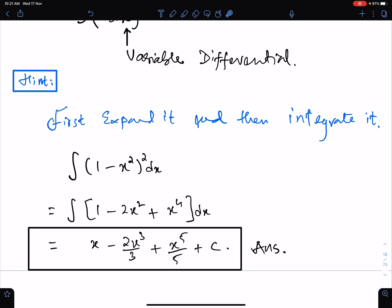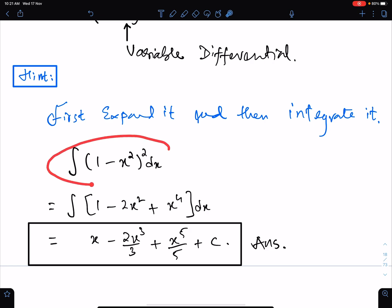You used to do this thing in B1. You used to expand this by means of a minus b whole square and then you easily integrate it. So this is the easiest way to integrate this function. This question is of B1 and you used to solve this question in this way.